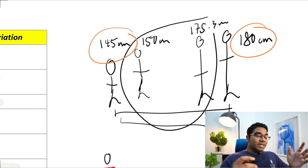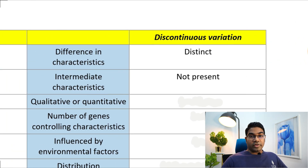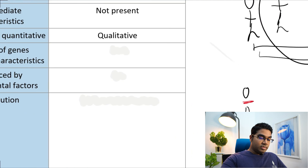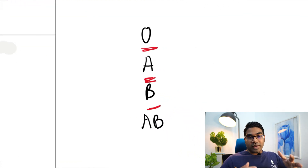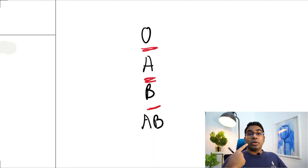Whereas for discontinuous variation, the characteristic is usually qualitative, such as blood group — this is not quantifiable. We cannot quantify blood group. Another example would be the ability to roll your tongue. You either can roll your tongue or you cannot roll your tongue. There is nothing in between and this is not quantifiable. You cannot assign a value to this characteristic. Therefore, it is a discontinuous variation.